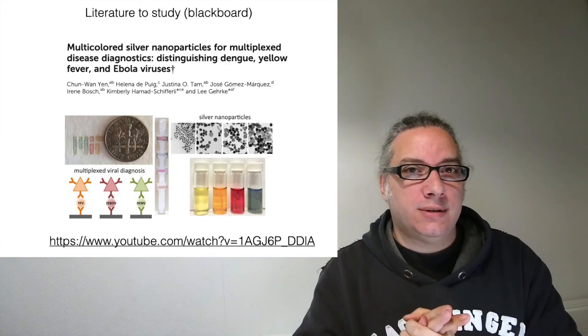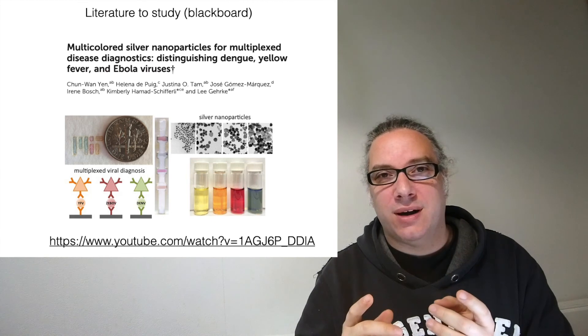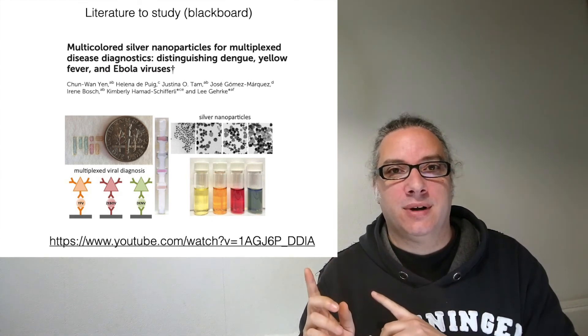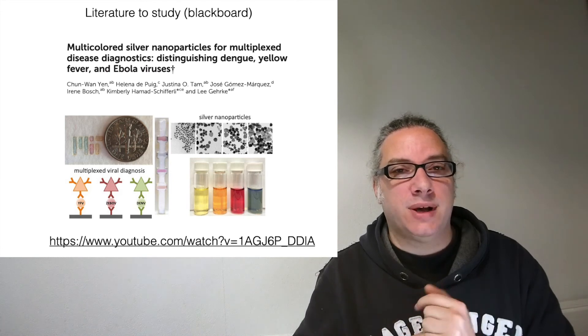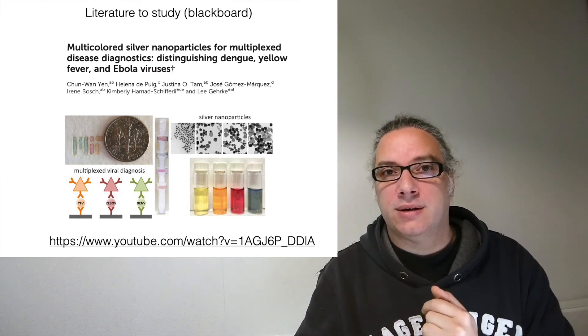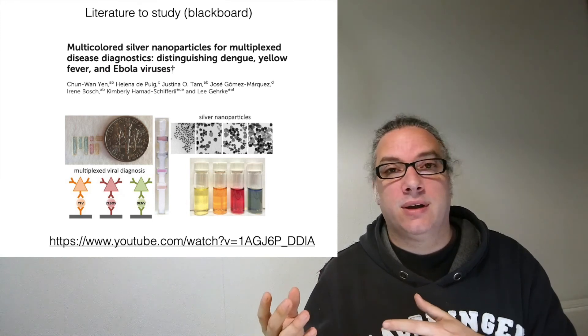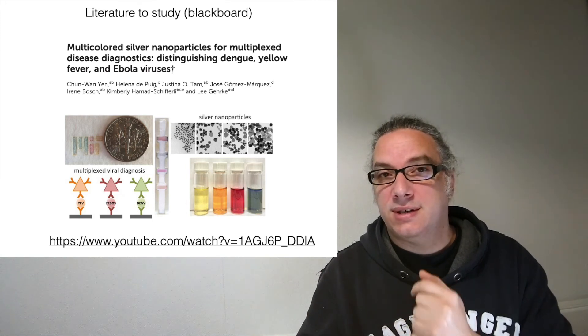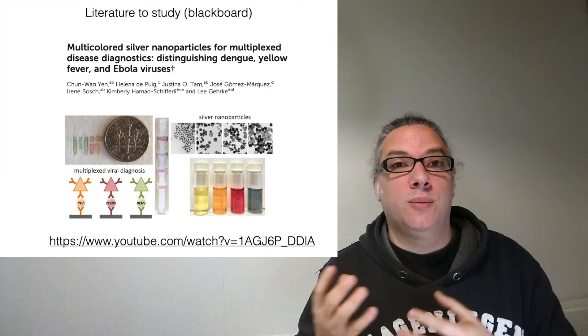I told you it's very difficult to make multiplex, and this is the reason I want you to study this paper. This paper is pretty amazing because it's multiplex in a very smart way. Instead of using different sensors for different colors, they use a single nanoparticle—silver nanoparticles—but depending on the size you get different colors.